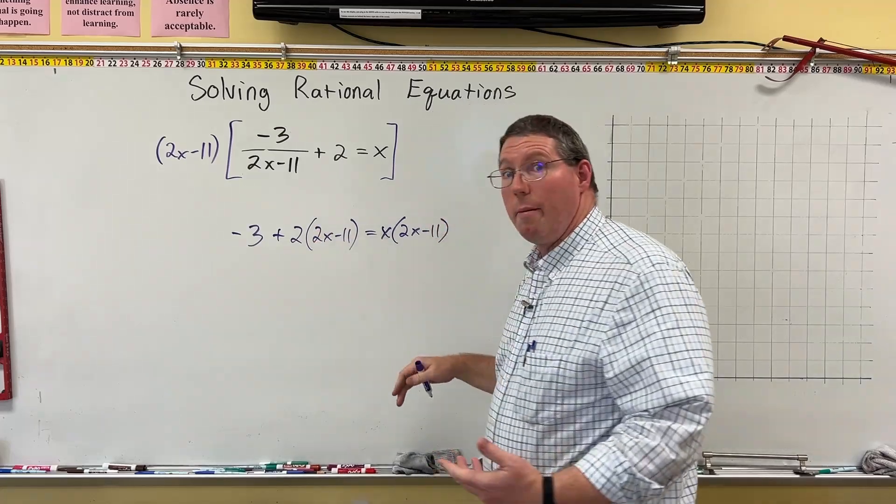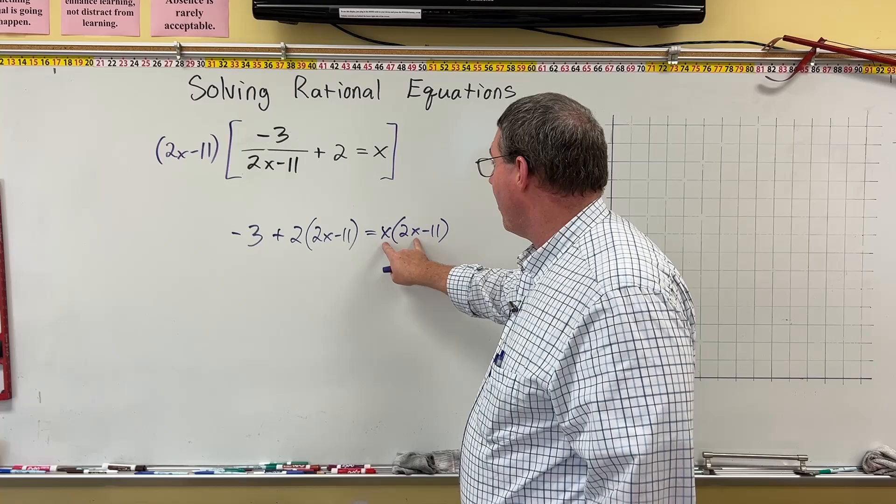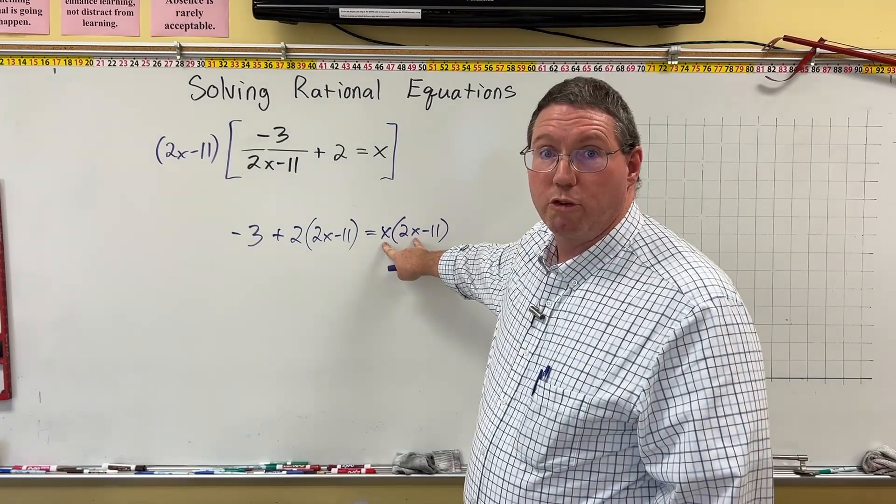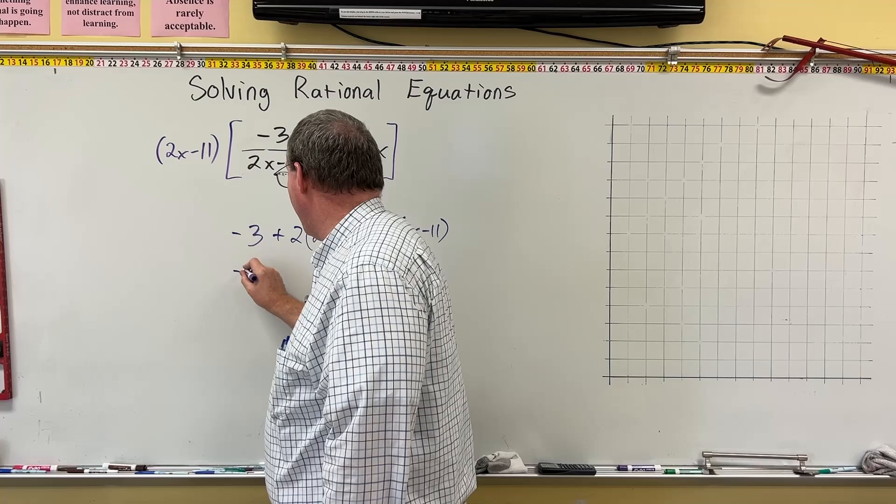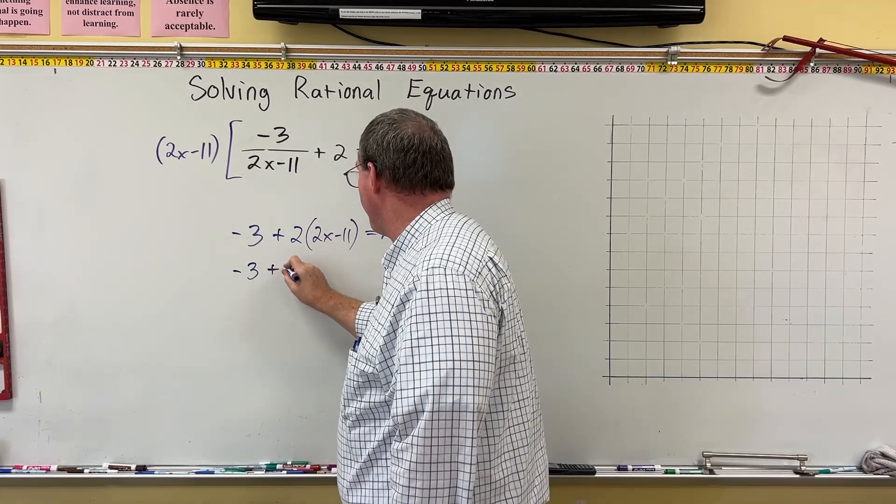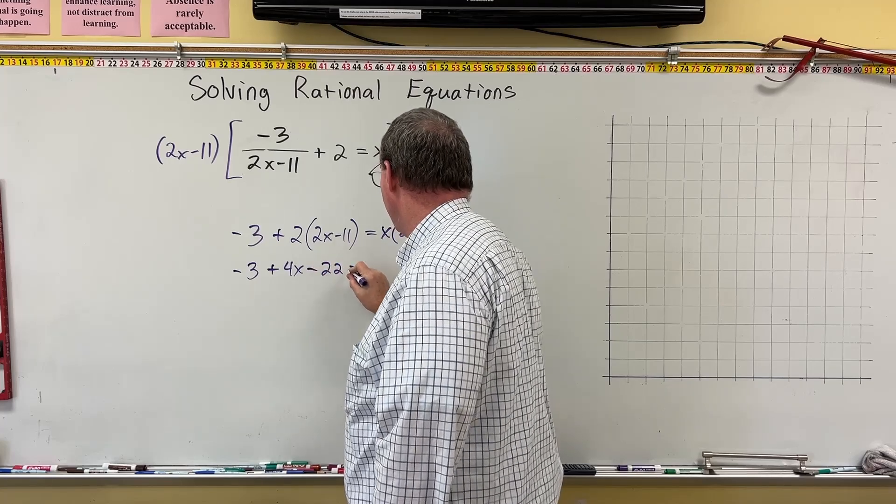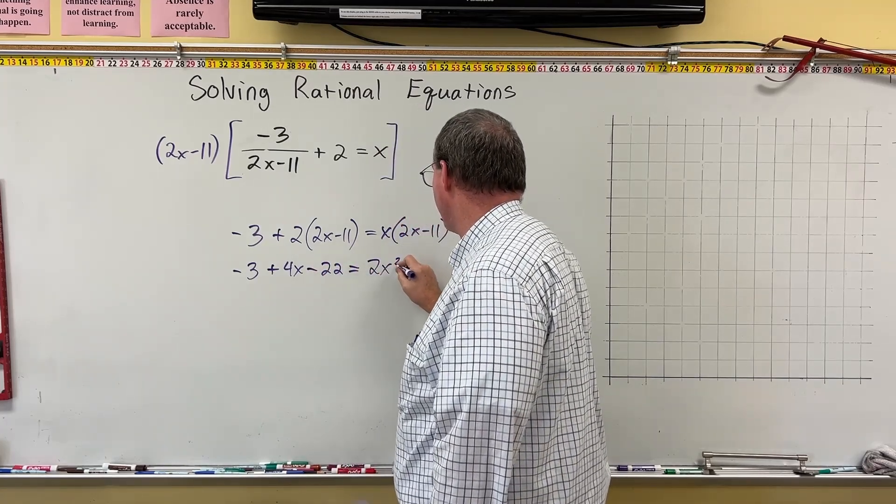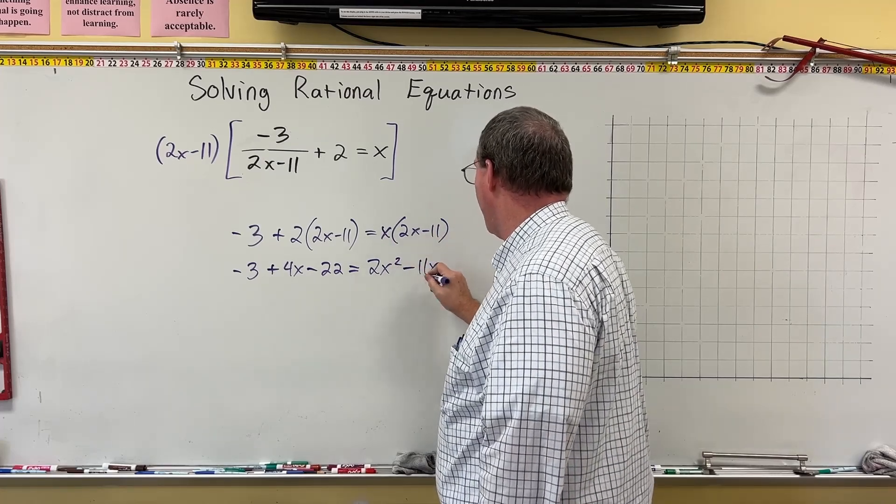Now we have no more denominators. Now it just looks like something that we've seen before, except this right here is going to cause it to be a quadratic. This is going to wind up being a quadratic equation. So now we have negative 3 and then 2 times 2x is plus 4x. 2 times negative 11 is negative 22 equals x times 2x is 2x squared and x times negative 11 is negative 11x.